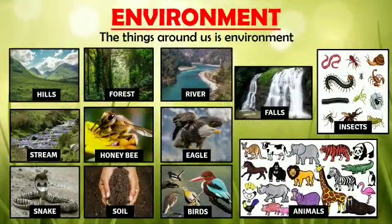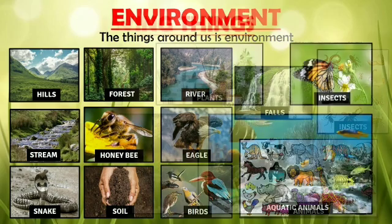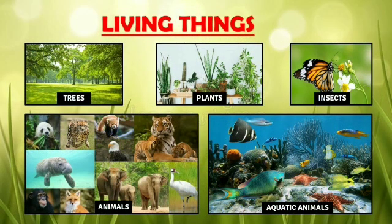The things around us is environment. Protection of environment is the duty for all. We can enjoy the environment by seeing it. Here are a few pictures: hills, forest, river, falls, insects, stream, honeybee, eagle, snake, soil, birds, and animals. All these come under our environment. In our environment we have both living and non-living things.